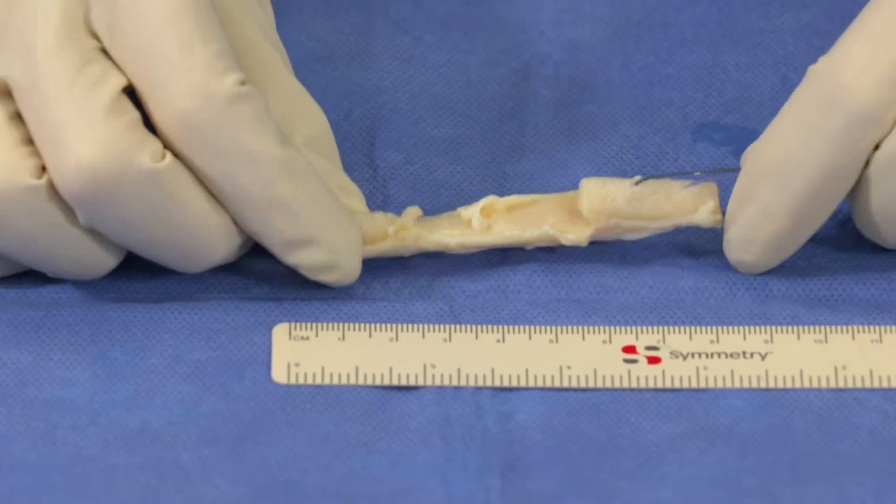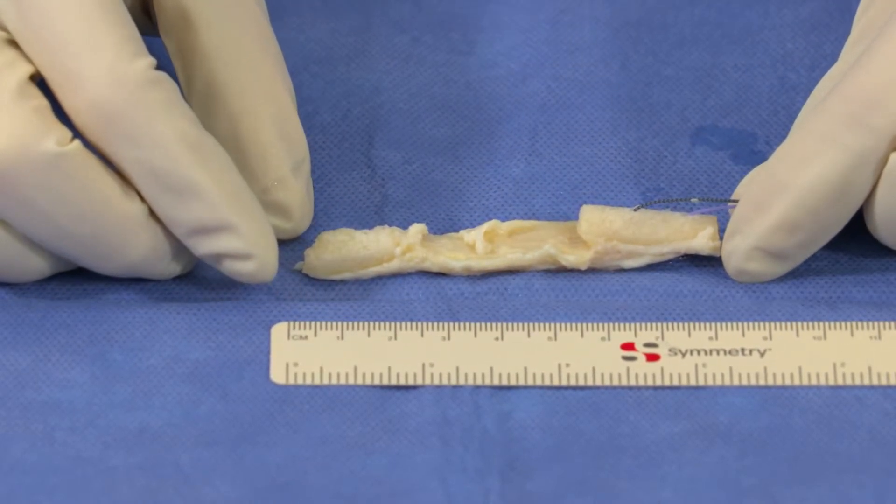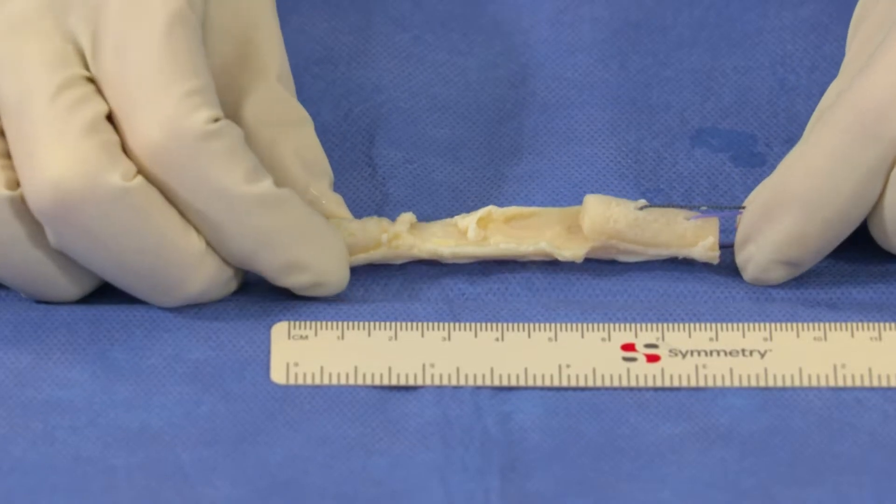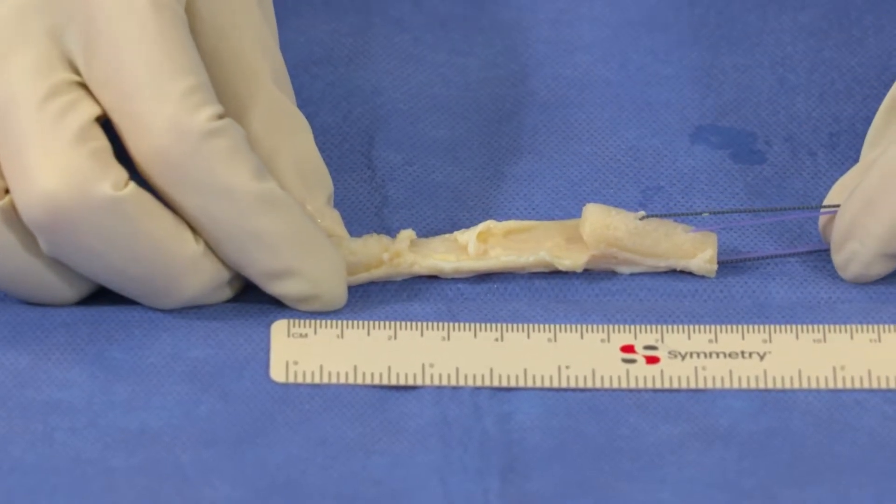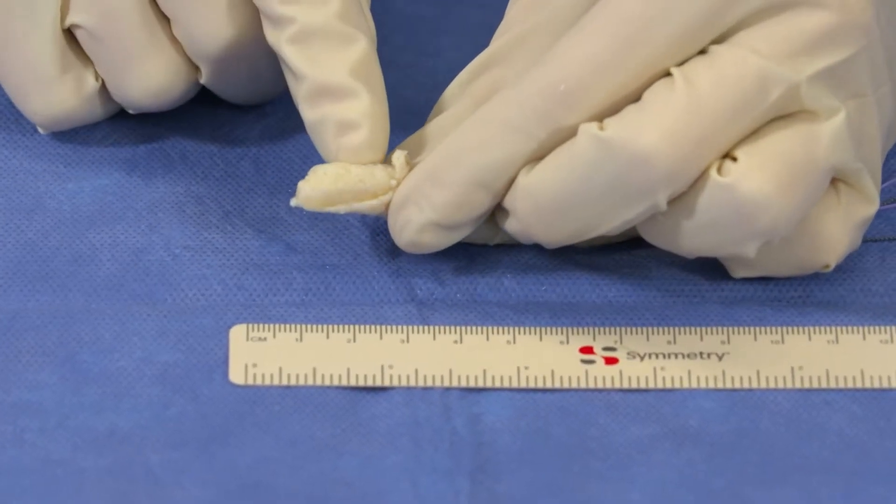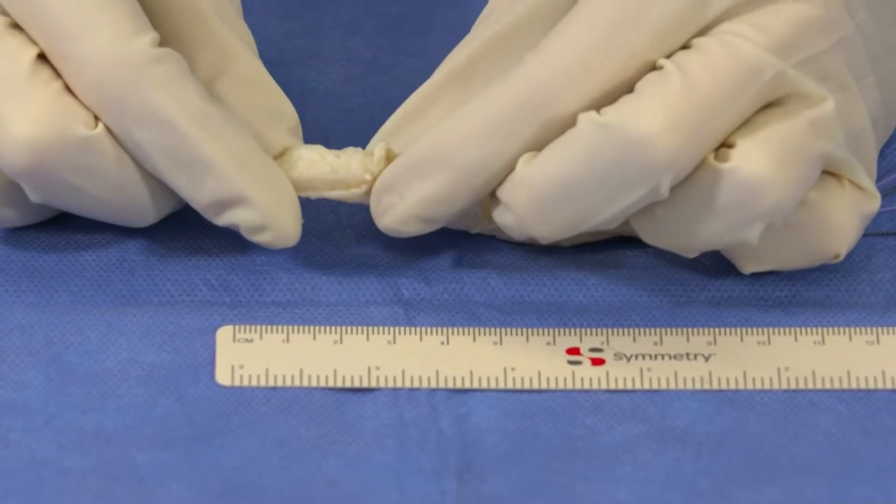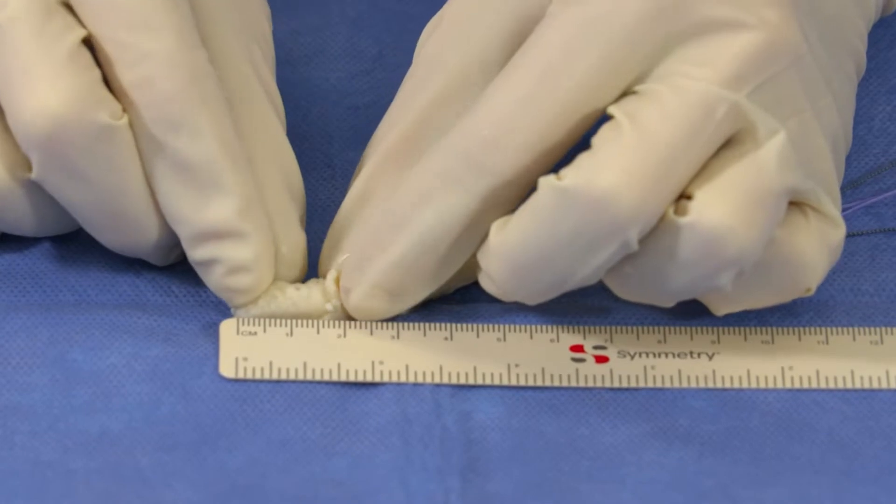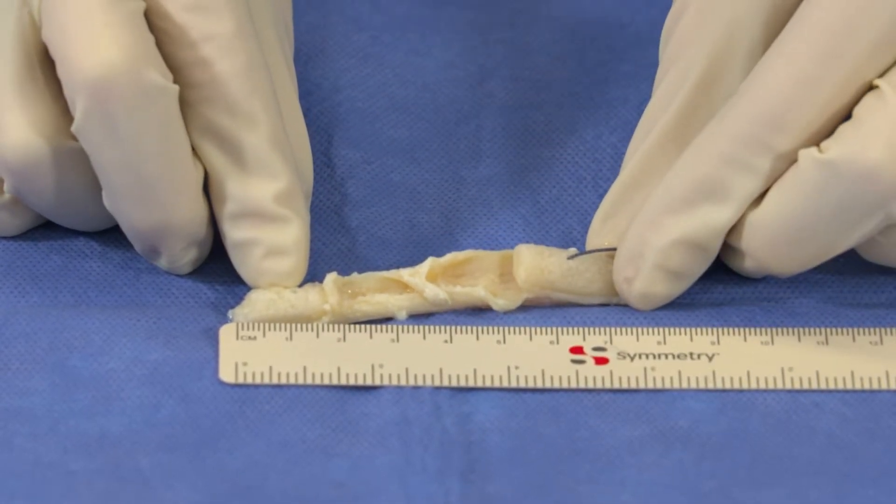This is our bone patella tendon bone graft that we're going to be using for our suspensory ACL reconstruction. A couple key points since we're doing the suspensory fixation and we use the twister guide, a retrograde reamer. Focusing on the femoral aspect of the graft, it's really important that the femoral aspect of the graft is going to be less than 20 millimeters in length. Here we have the graft that's 18 millimeters in length on the femoral bone side.